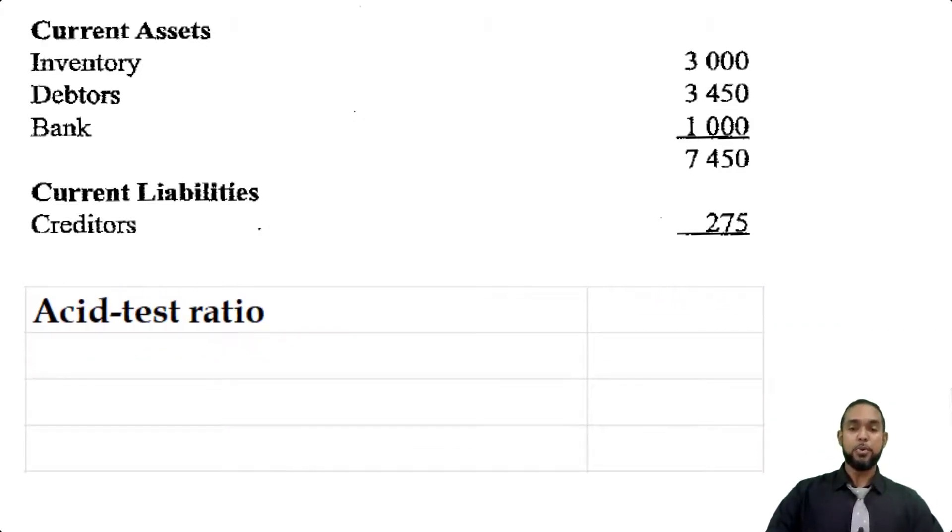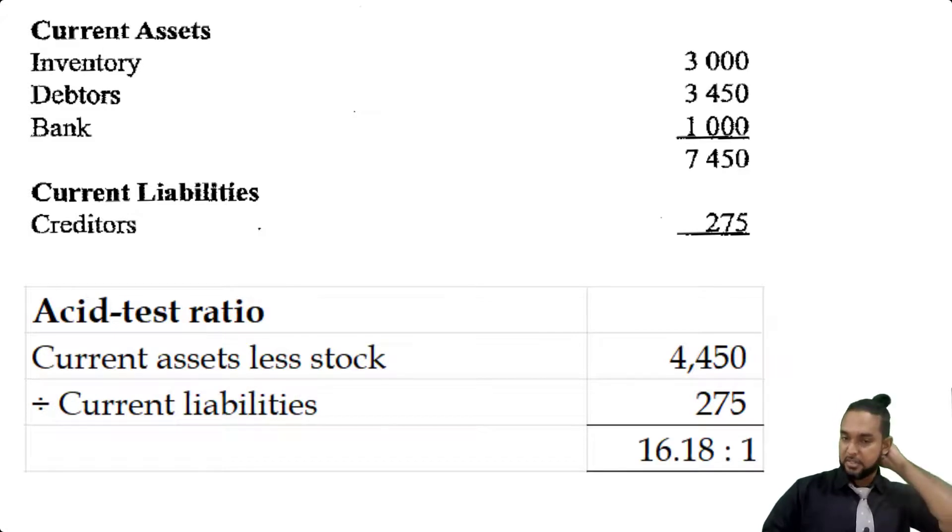The next ratio is the acid test ratio, which is a slightly more stringent or harder test of liquidity because it takes the current assets but excludes stock and divides it by current liabilities. Our current assets excluding stock will simply be the debtors and the bank. That's going to give us 4,450 and we're dividing by the same 275, and that's going to give us 16.18 to 1. So we have, if you exclude stock, $16.18 of current assets available to pay off every $1 of current liabilities. Now why are we excluding stock? Stock is the least liquid current asset. You are never bound to sell stock.